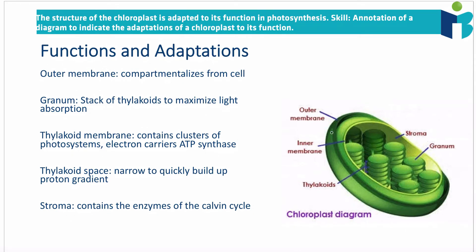The chloroplast has an outer membrane, an inner membrane, and then it has all these thylakoids, which are stacked on top of each other to form what's called a granum. These grana are then connected to each other using what we call a lamella — a connection between two thylakoids. Surrounding this thylakoid space we have what we call the stroma, which is kind of like the cytoplasm of the chloroplast.